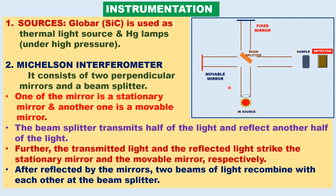Let us now see the instrumentation. This is the schematic of the FTIR spectrophotometer. It consists of an IR light source. A Globar is used as a thermal light source — it is made up of silicon carbide. By heating silicon carbide, it emits IR radiation. Alternatively, mercury lamps under high pressure can be used.